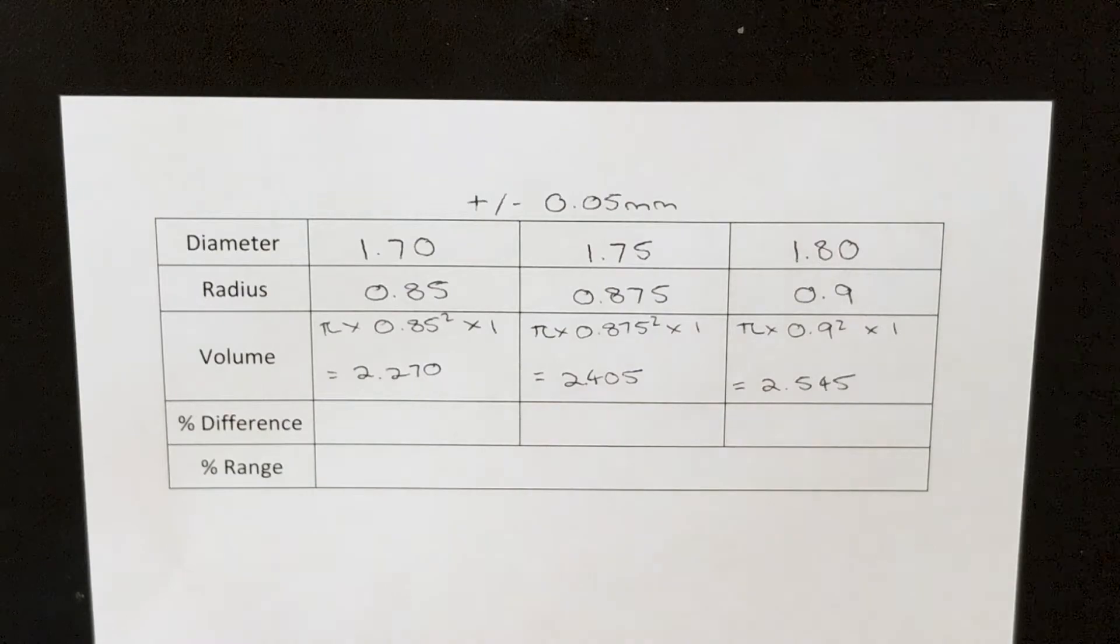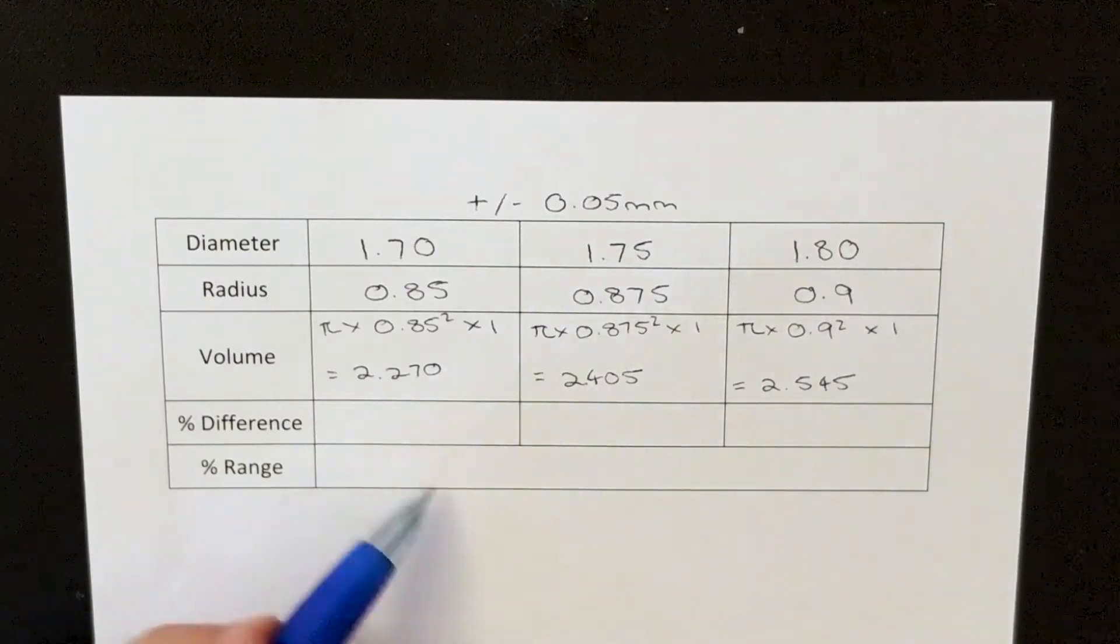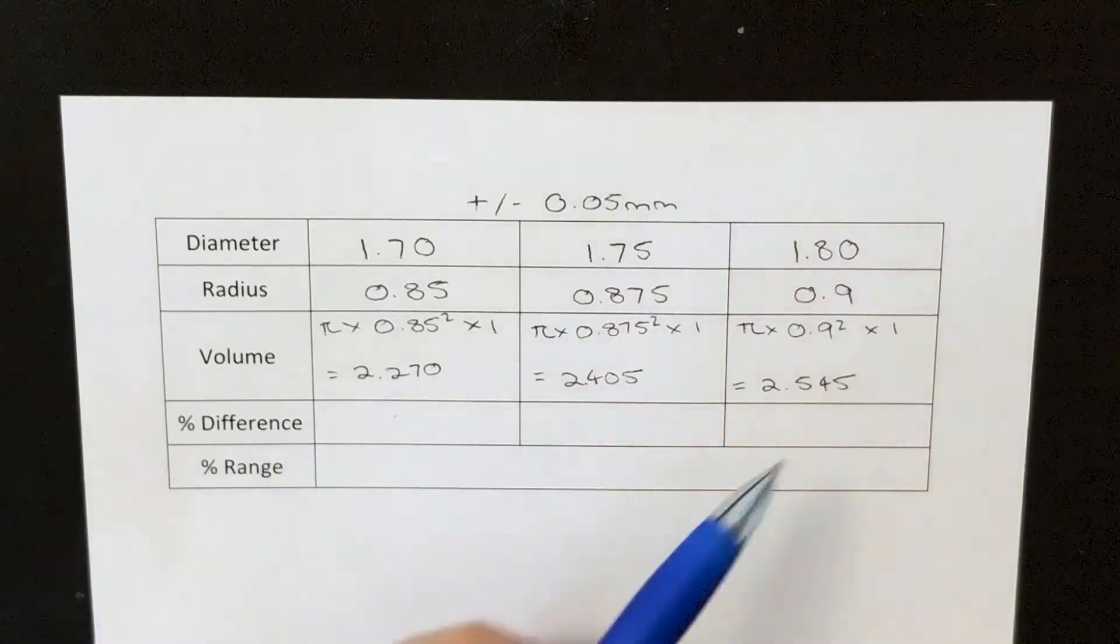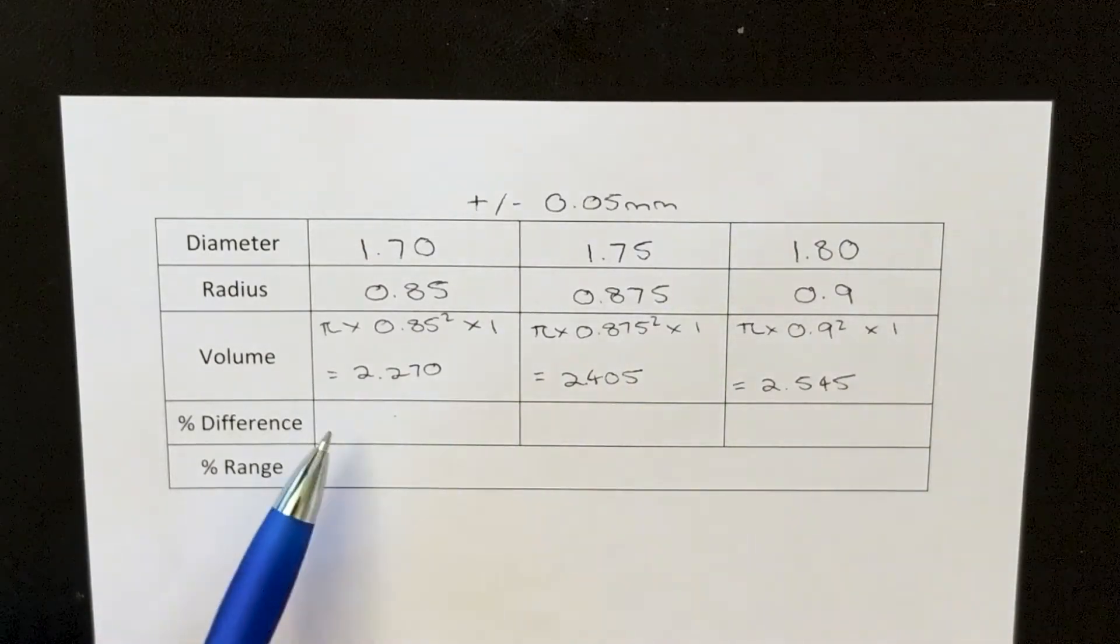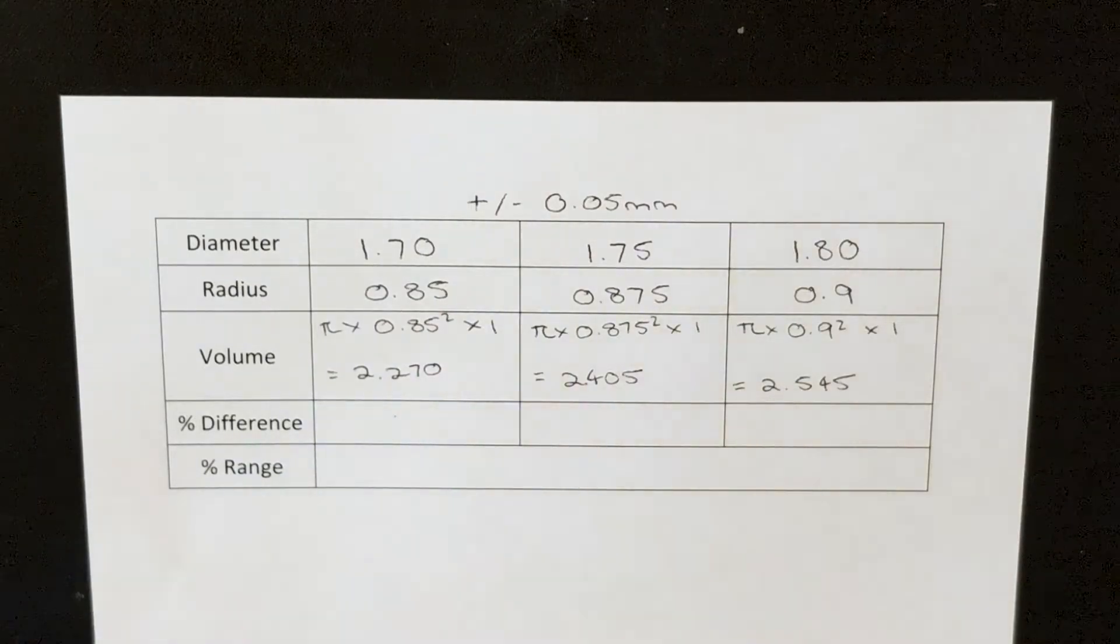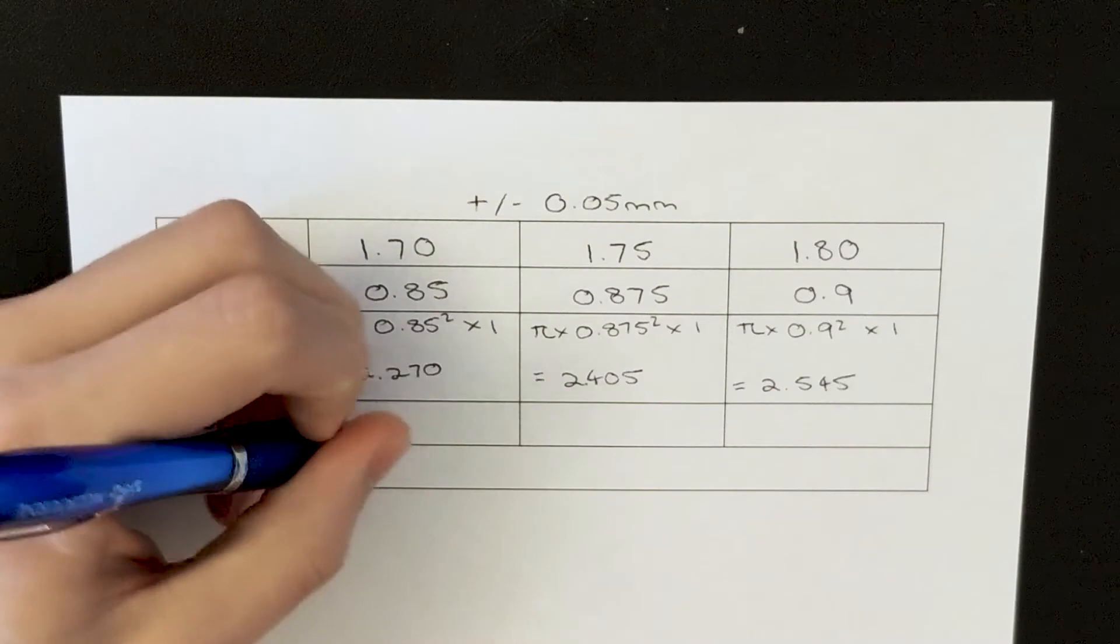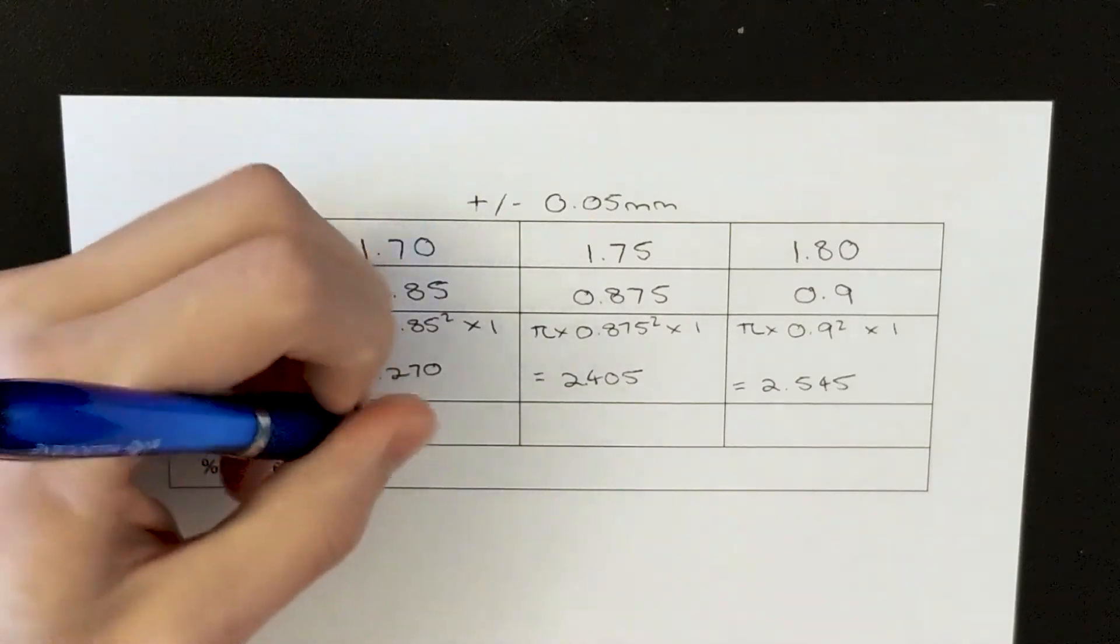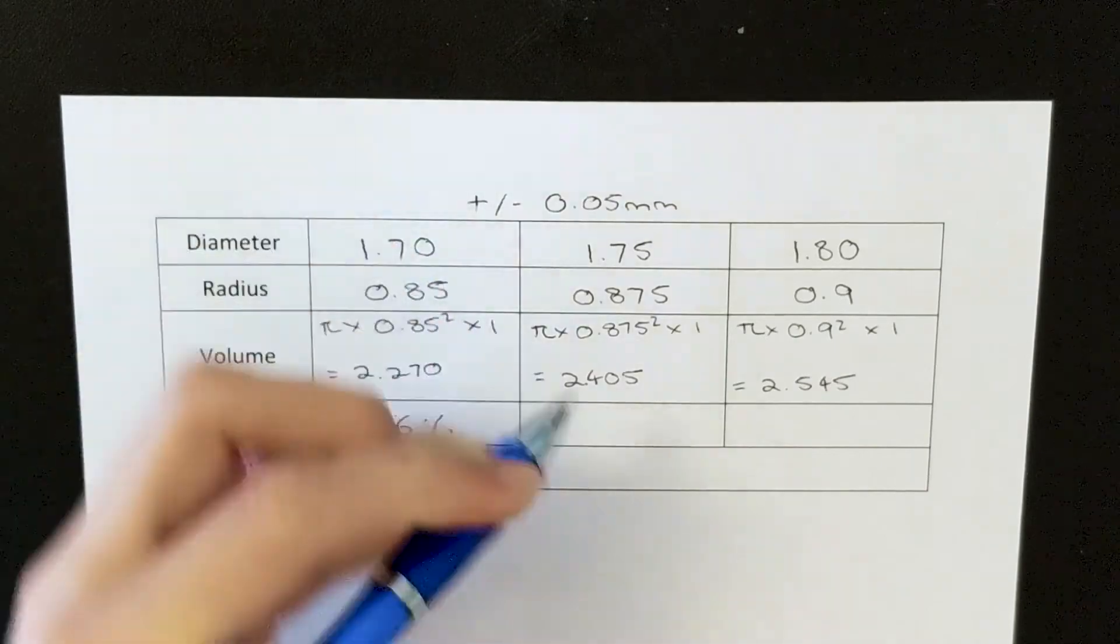Alright, so I've calculated the volume for a 1mm length of all three of these filament diameters. Now what I'm going to do is compare 1.7 and 1.8 to the 1.75mm volume, and see what the percentage difference is between them. Now I've calculated that the 1.7mm volume is actually 5.6% less than the 1.75.